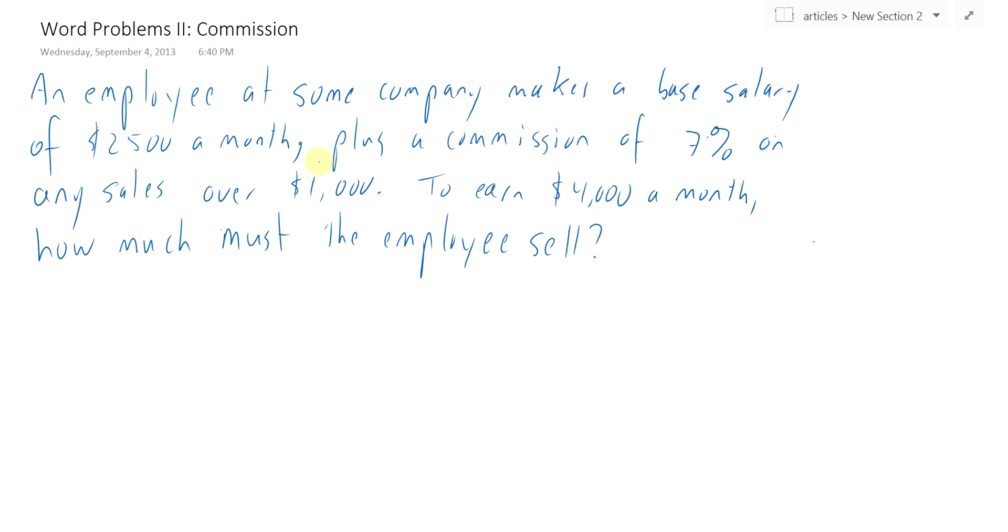If they sell $2,000, then they get 7% of a thousand dollars commission. So to earn $4,000 a month, how much must the employee sell?